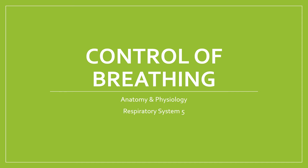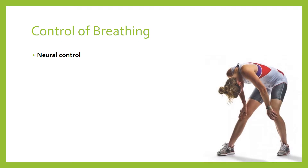Welcome to the control of breathing lesson, part of the respiratory system. There are two key ways the body controls your breathing — how fast you breathe, how deeply you breathe, and so on. The first is neural control, which means control via neurons, the nervous system, the brain, and the central and autonomic nervous system. The second type of control is chemical control.